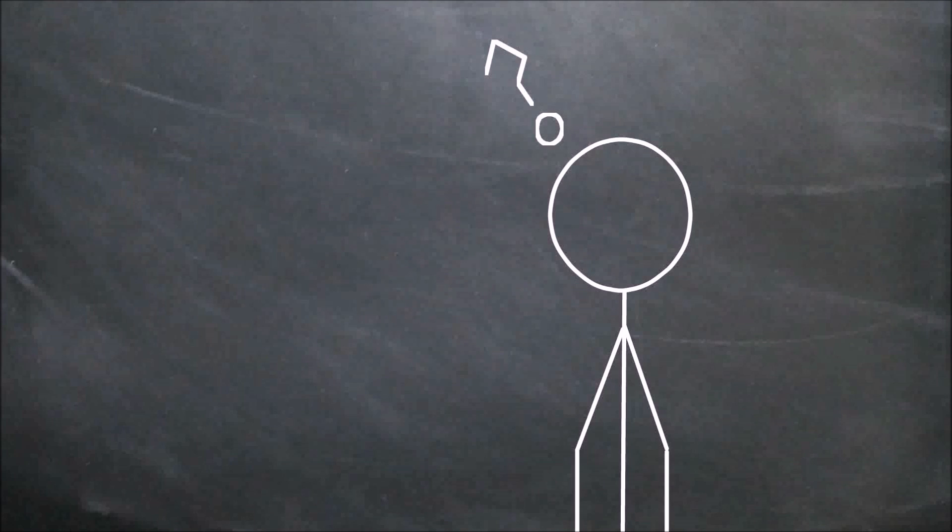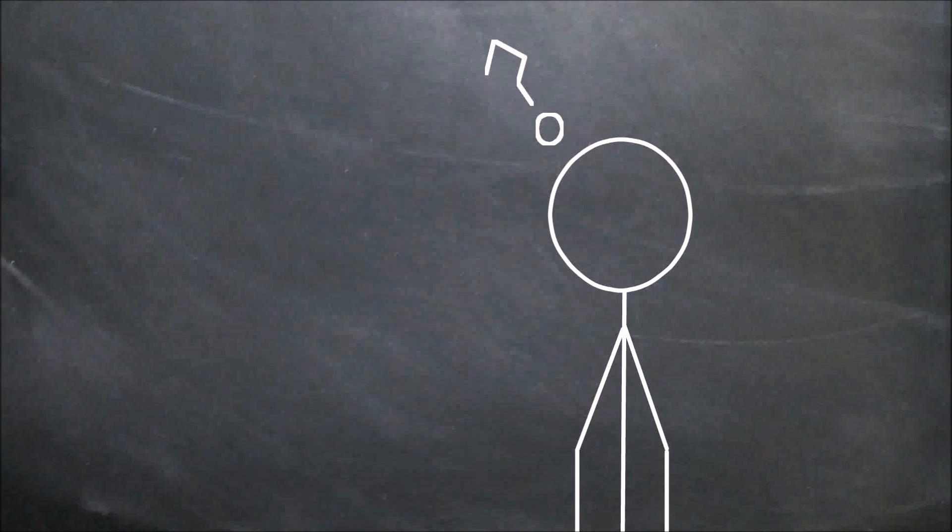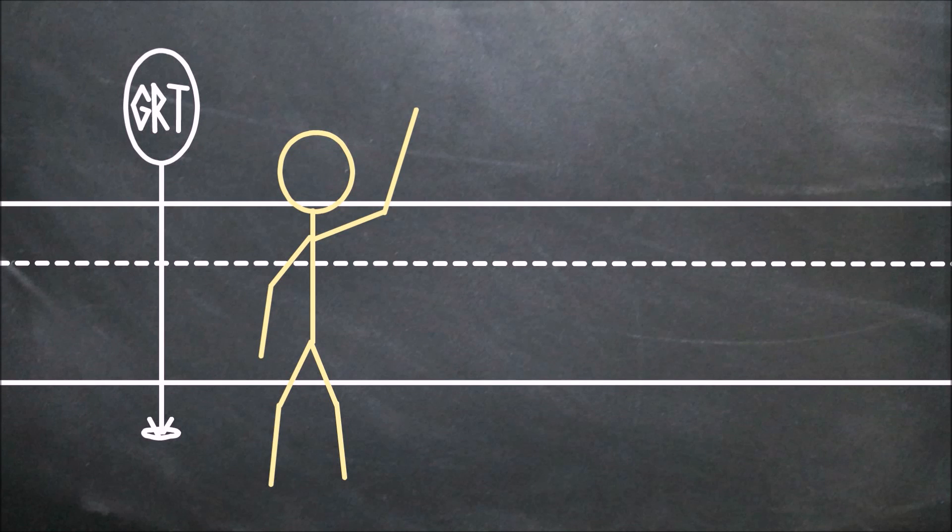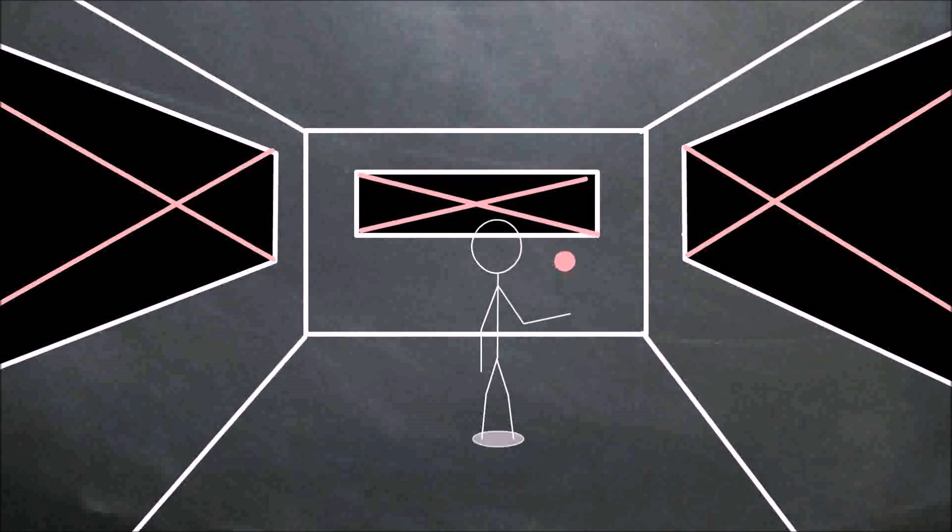Is it even possible to figure out who's standing still at all? The surprising fact is that no, there is nothing you can do to convince everybody, regardless of their state of motion, that you are really the one who is standing still. All you can say is, hey, every experiment I do makes it look like I'm standing still, regardless if someone else disagrees.